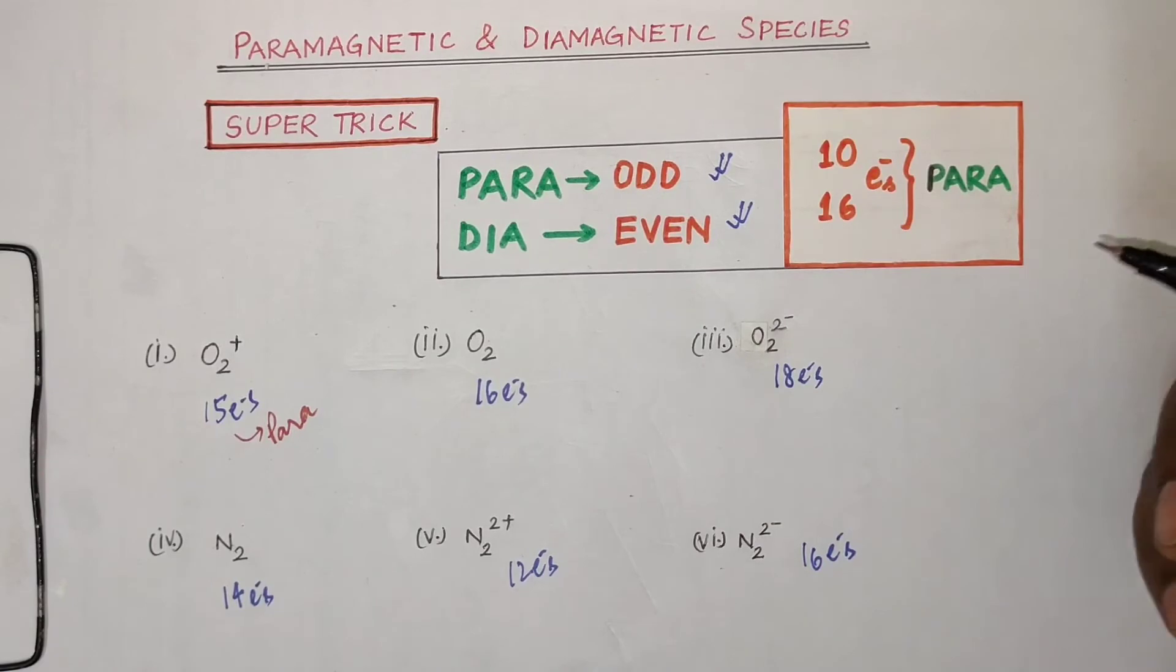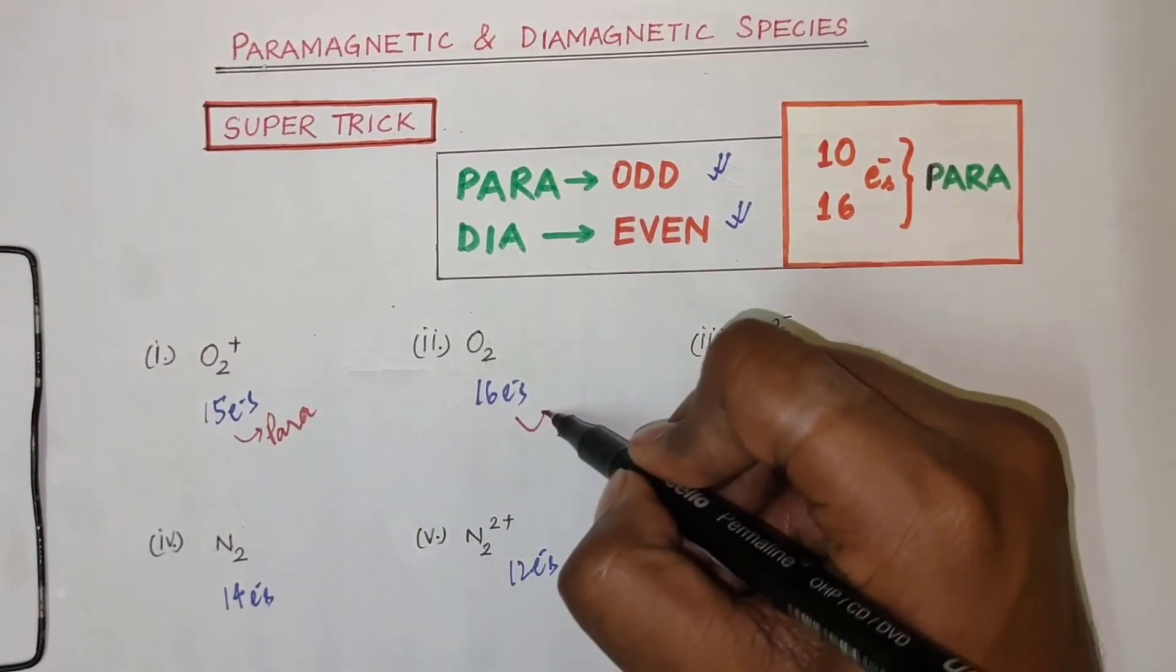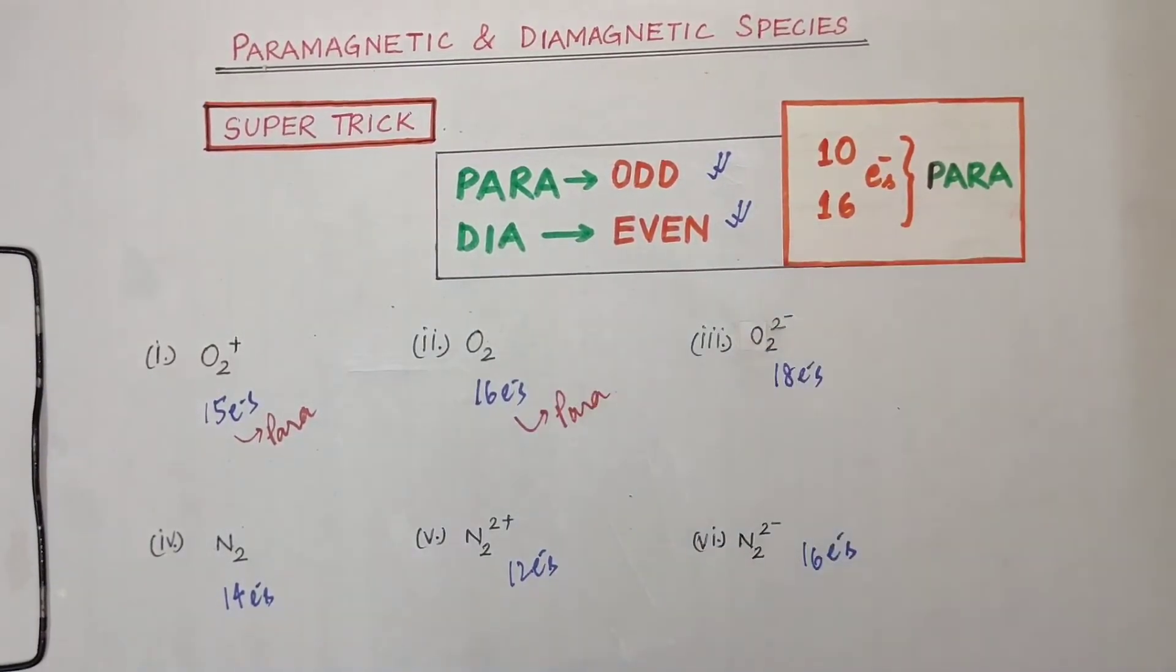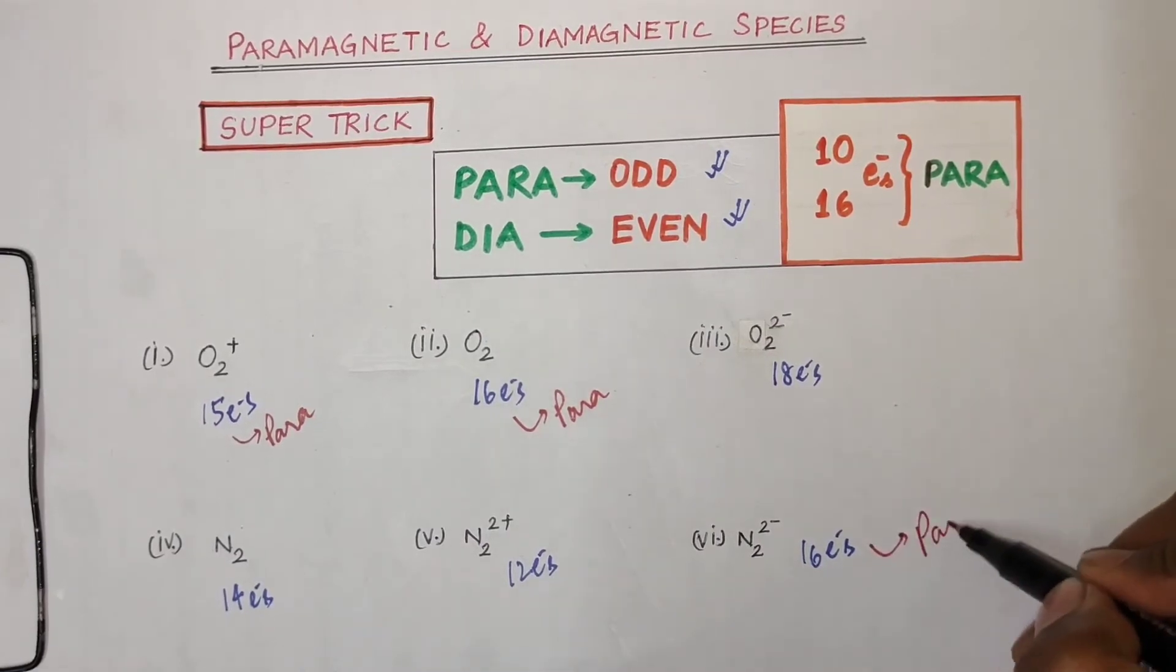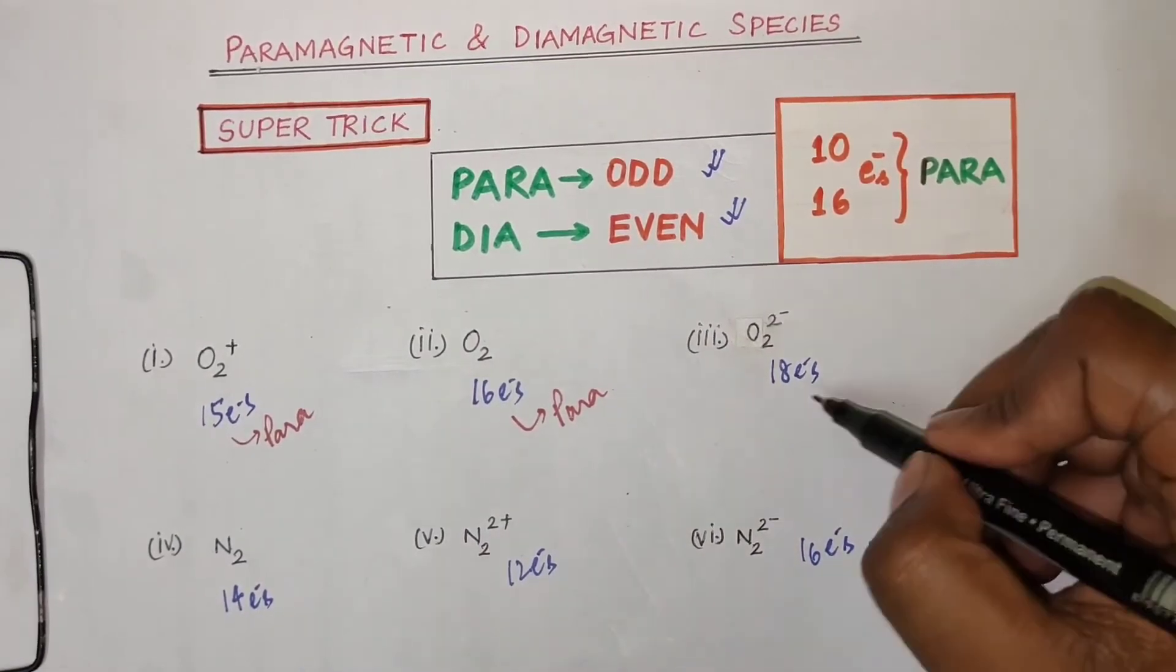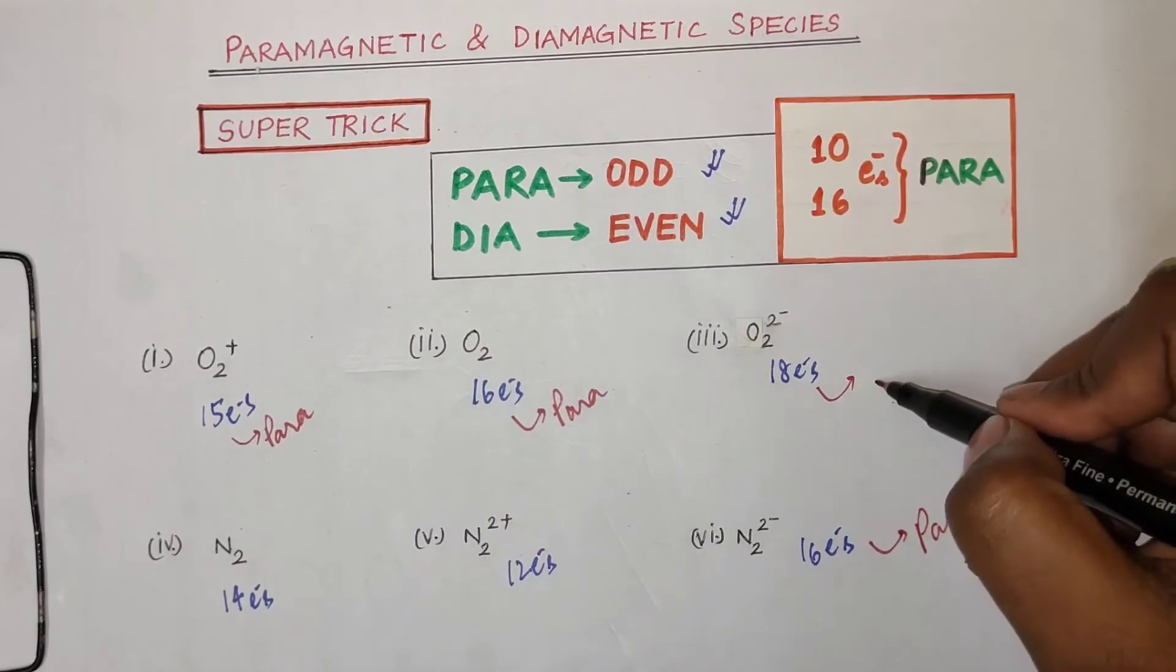We should think that there was 10 or 16 electrons, but here there is 16 electrons. So this is a pair of electrons. What else we have seen? It is diamagnetic.